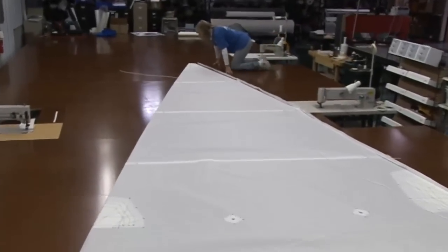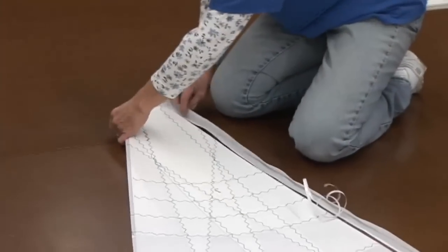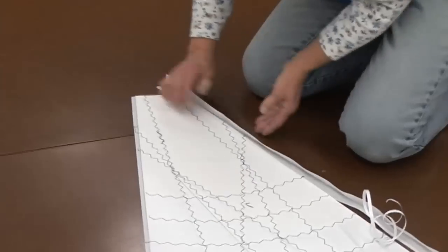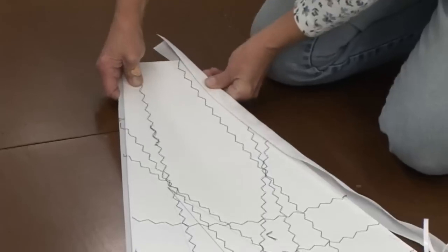Along the leach we'll install the Dacron tape. This Dacron tape has been folded or creased in the middle. We've applied double sided tape on both sides and then basted it to the leach.